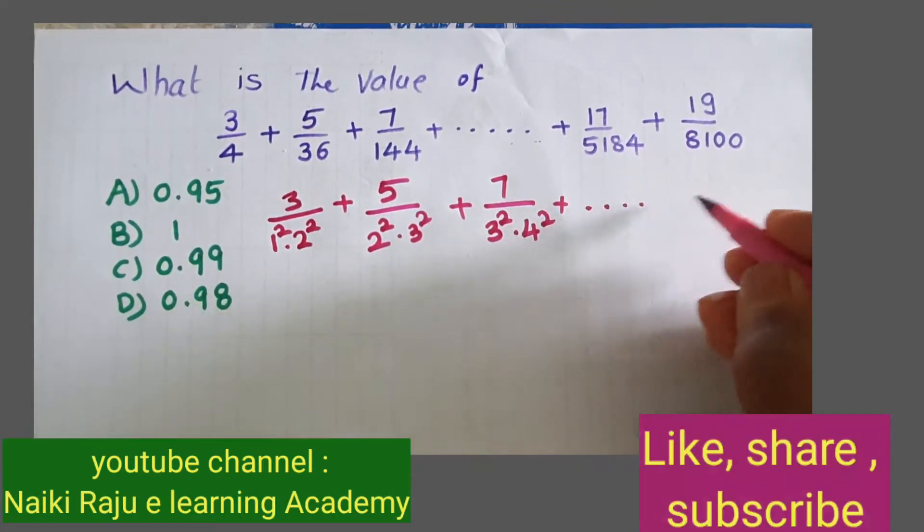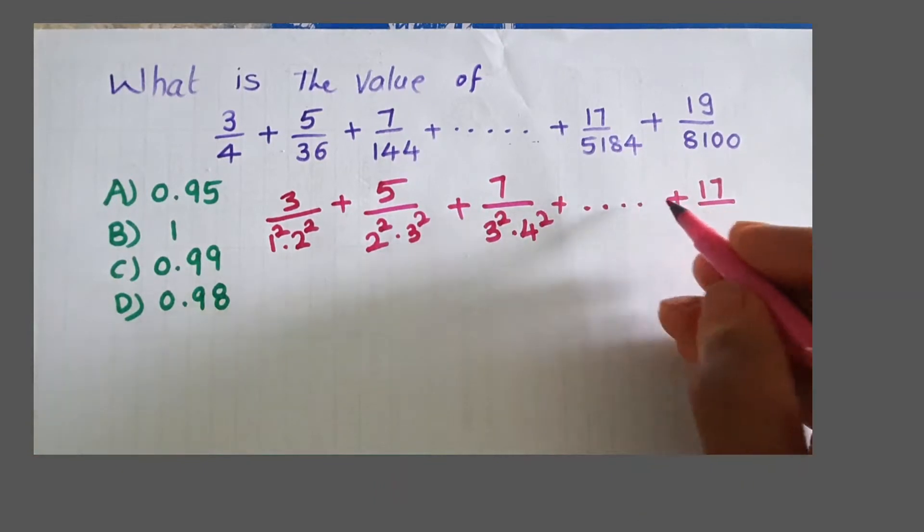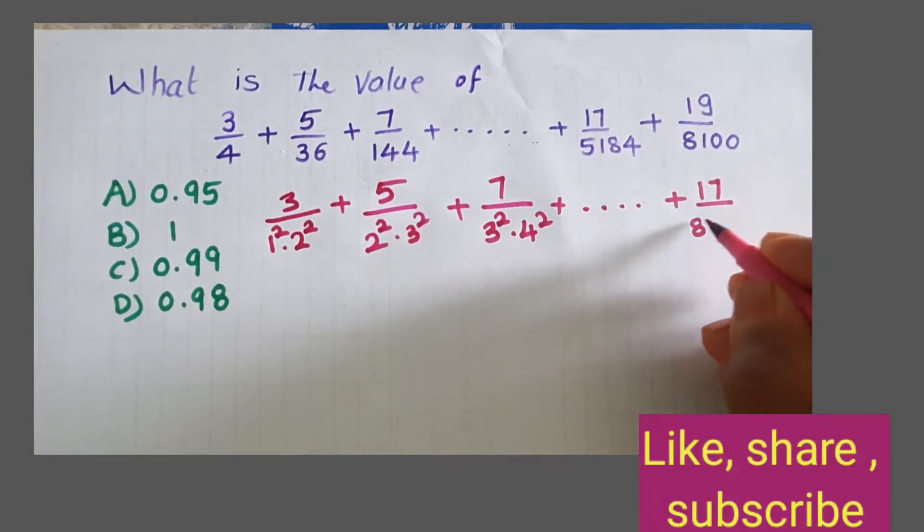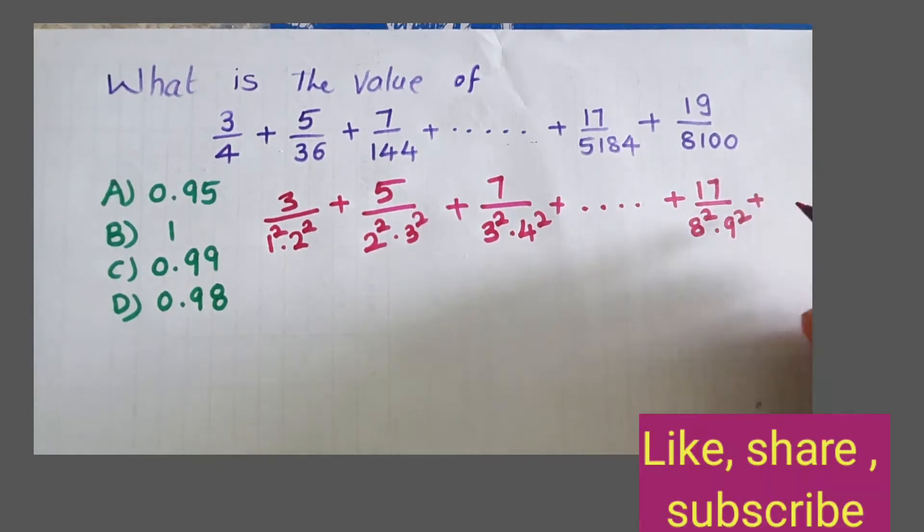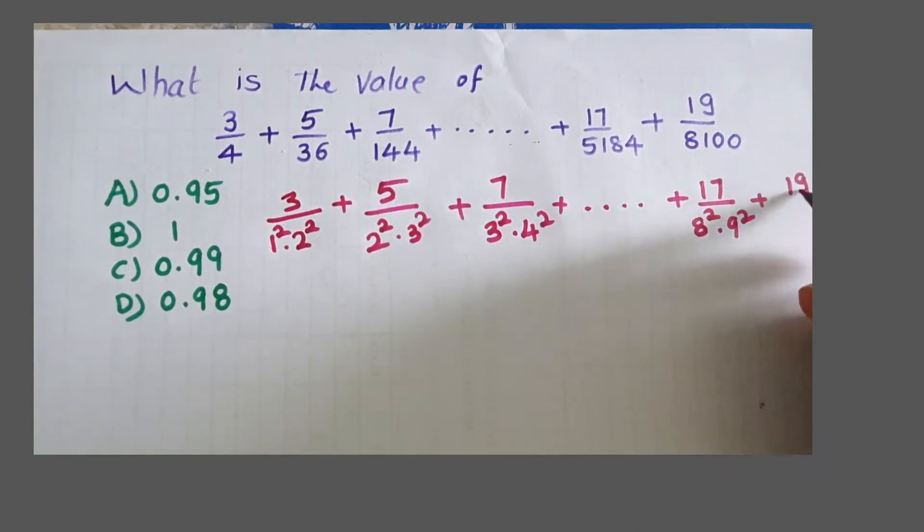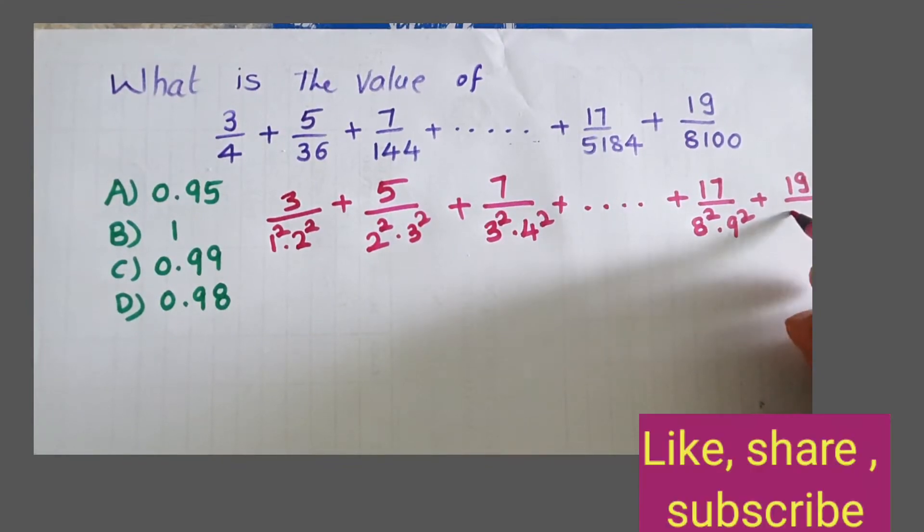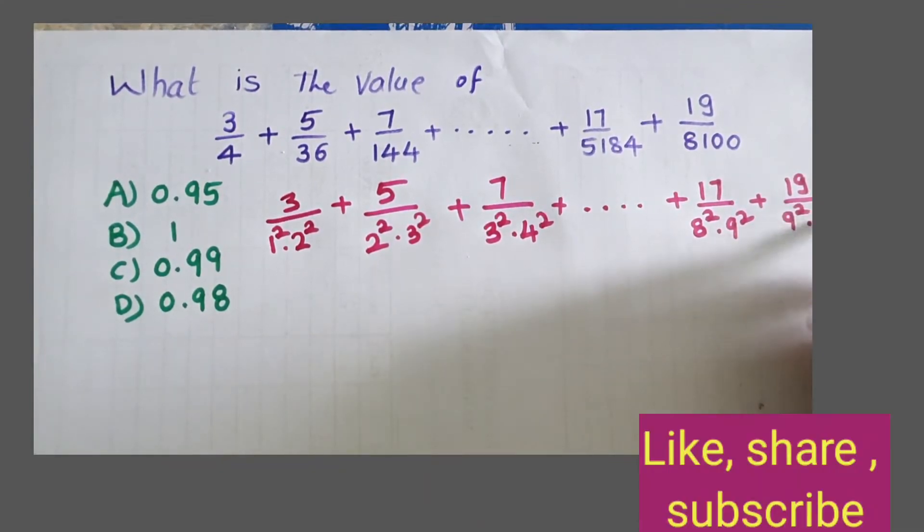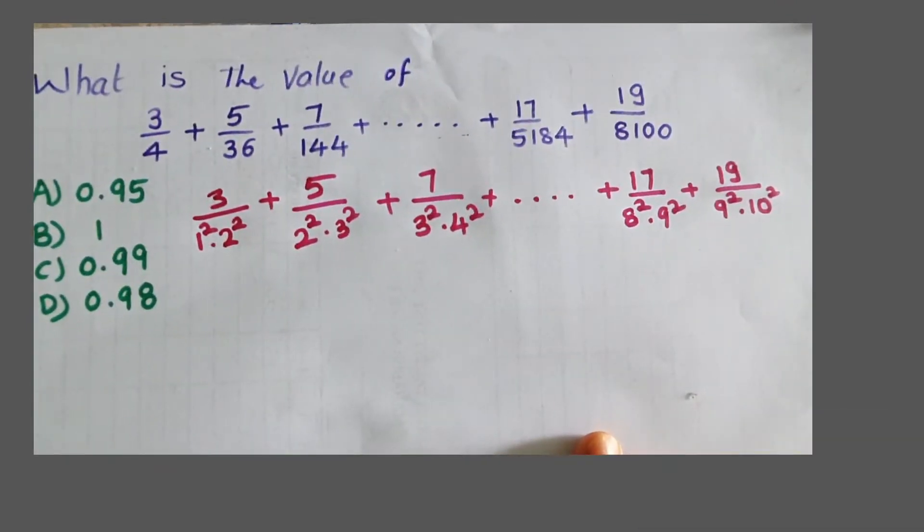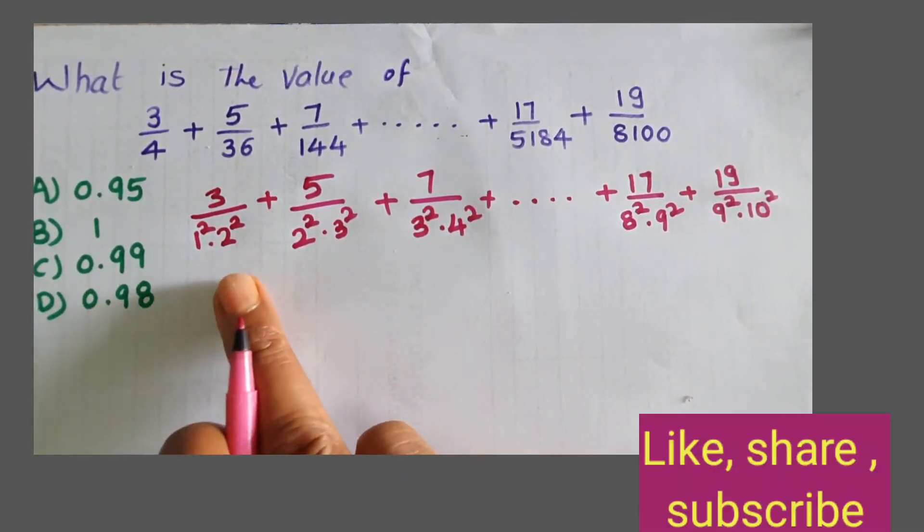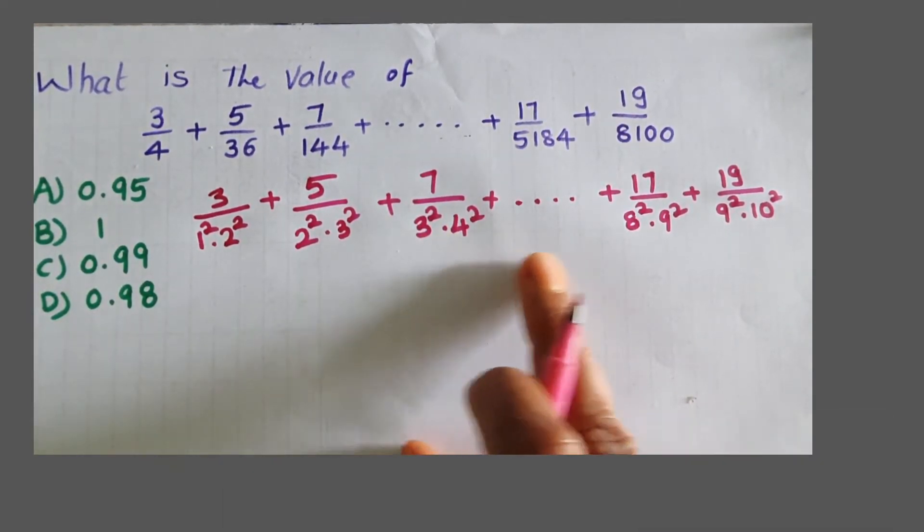Plus 17/5184 - this is 8 squared times 9 squared. And 90 squared is 9 squared times 10 squared. The first step: I write 3 by 1 squared times 2 squared, plus 5 by 2 squared times 3 squared, plus 7 by 3 squared times 4 squared.